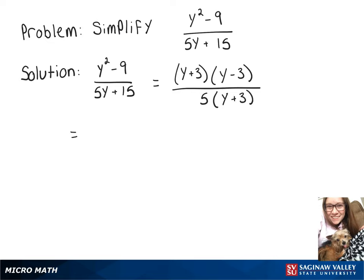Now we can rewrite that as y plus 3 over y plus 3, times y minus 3 over 5. This part will cancel out because it's equal to 1, which leaves us with y minus 3 over 5.